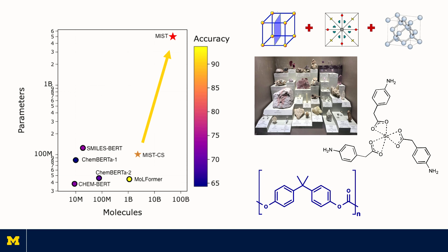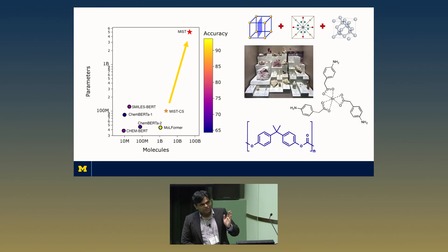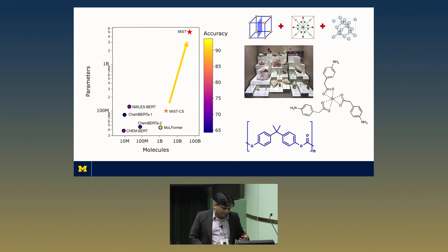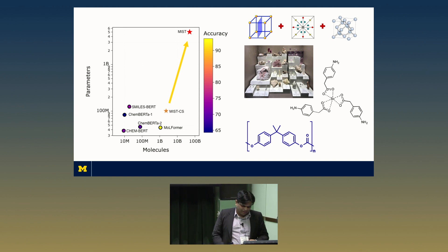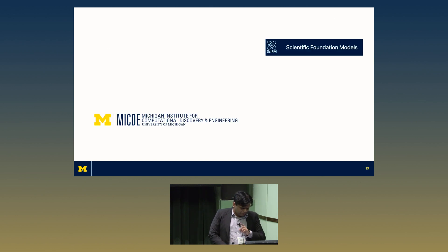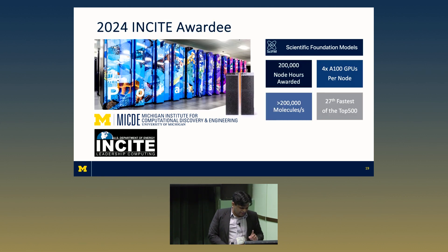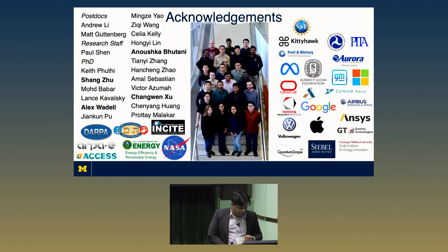Beyond that starting point, there are polymers — there's a text-based representation called BigSMILES that is finding its way. And of course, amorphous materials remain a challenge. The outlook for this field is really, really exciting. None of this would have been possible without early support from MICDE through a Catalyst Grant, and an Insight Award won along with Arvind for 200,000 node hours. Thanks to Anushka and Alex who have done all the work. Happy to take questions.